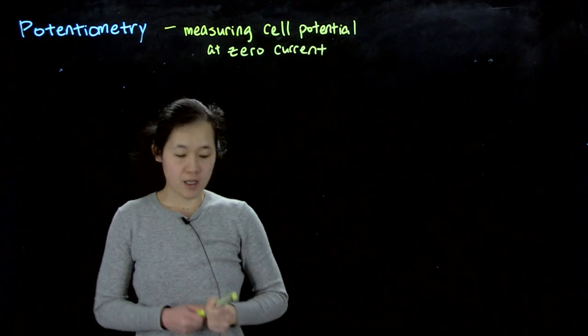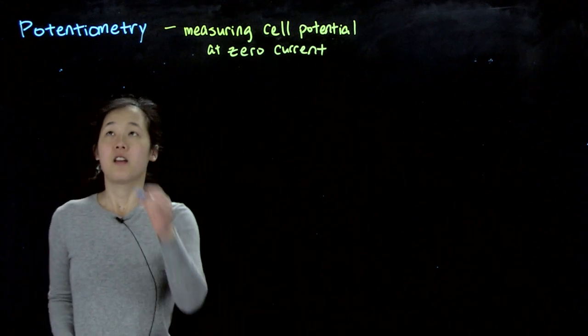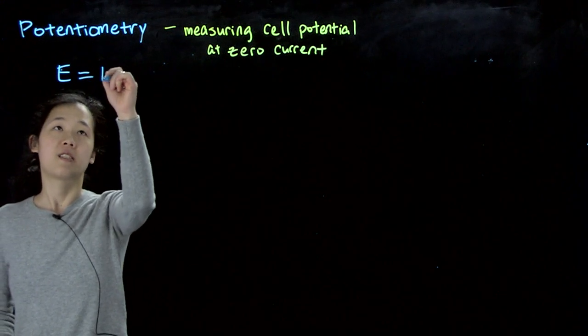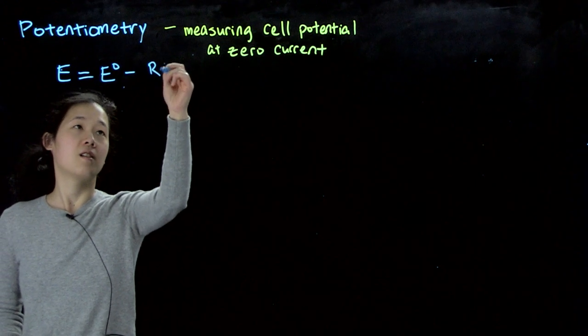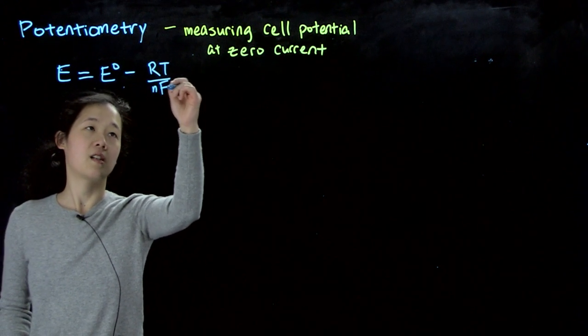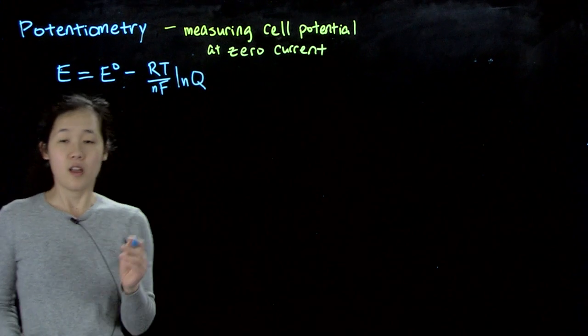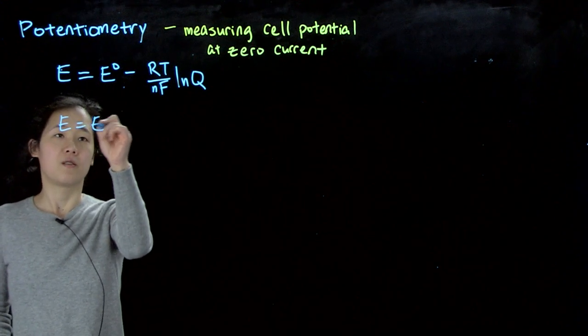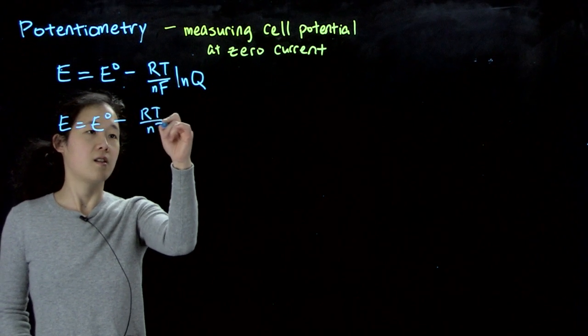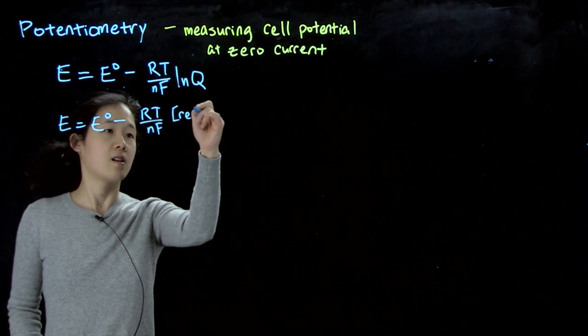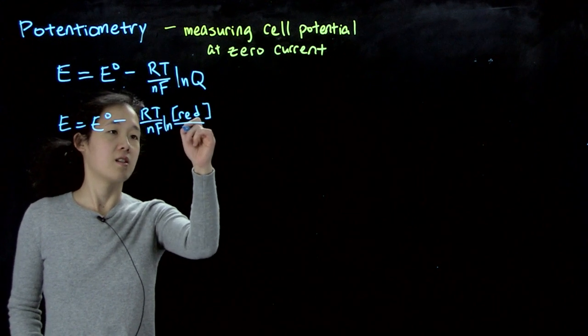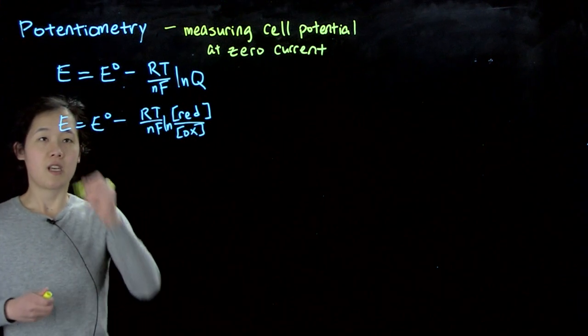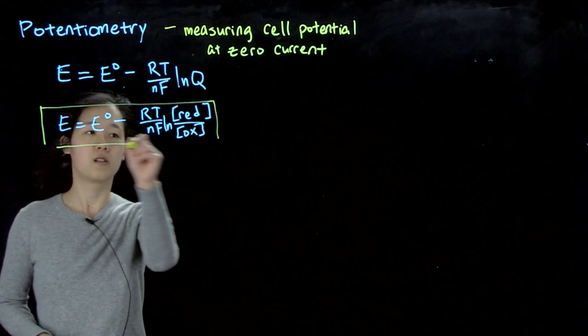And the reason this is useful is because we know from last class that the potential, it doesn't have to be of a cell, it could be of a half reaction, could be related to the standard potential minus gas constant temperature, number of electrons, Faraday constant, natural log of Q. And then if we're talking only about reduction potentials, then this is also going to be equal to E° minus RT/nF log of the concentration of the reduced species over the concentration of the oxidized species. So this is one of the typical forms you'll see of the Nernst equation.